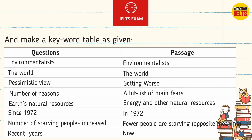The keyword table maps question terms to passage terms: 'pessimistic view' maps to 'getting worse'; 'a hit list of main fears' relates to 'Earth's natural resources' and 'energy and other natural resources'; 'since 1972' maps to 'in 1972'; 'number of starving people increased' maps to 'fewer people are starving' — which is the opposite meaning. 'Recent years' maps to 'new years' or 'now.'